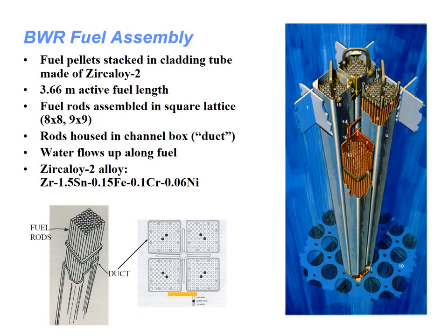The boiling water reactor fuel assembly has fuel pellets stacked in cladding tubes made of zircaloy, a zirconium-based alloy. These fuel rods are about three and a half meters long and are arranged in square lattices of either eight-by-eight or nine-by-nine, with water flowing up along the fuel. The rods are housed in a channel box, also called a duct. The zircaloy alloy contains zirconium, tin, iron, chromium, and nickel.